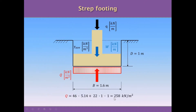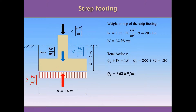Multiplying 258 kN per square meter by 1.6 meters gives the resultant in red, which is the capacity force the soil is able to provide. The self-weight of the foundation equals 1 meter depth times 20 kN/m³ average unit weight times 1.6 m width, giving 32 kN per meter.